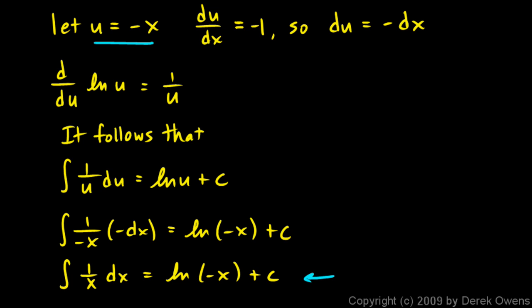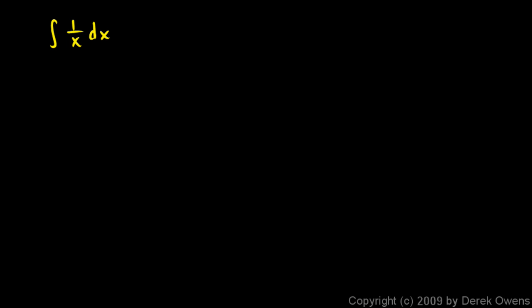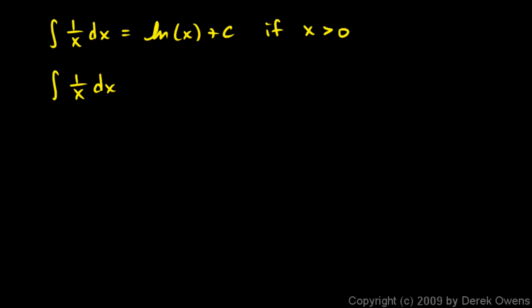Now how about that? The integral of 1 over x dx is equal to the natural log of negative x plus c. So we have two ideas now. We can say the integral of 1 over x dx is equal to the natural log of x plus c — and that's true if x is positive. And we can say the integral of 1 over x dx equals the natural log of negative x plus c — if x is negative. And both of those facts are now established.